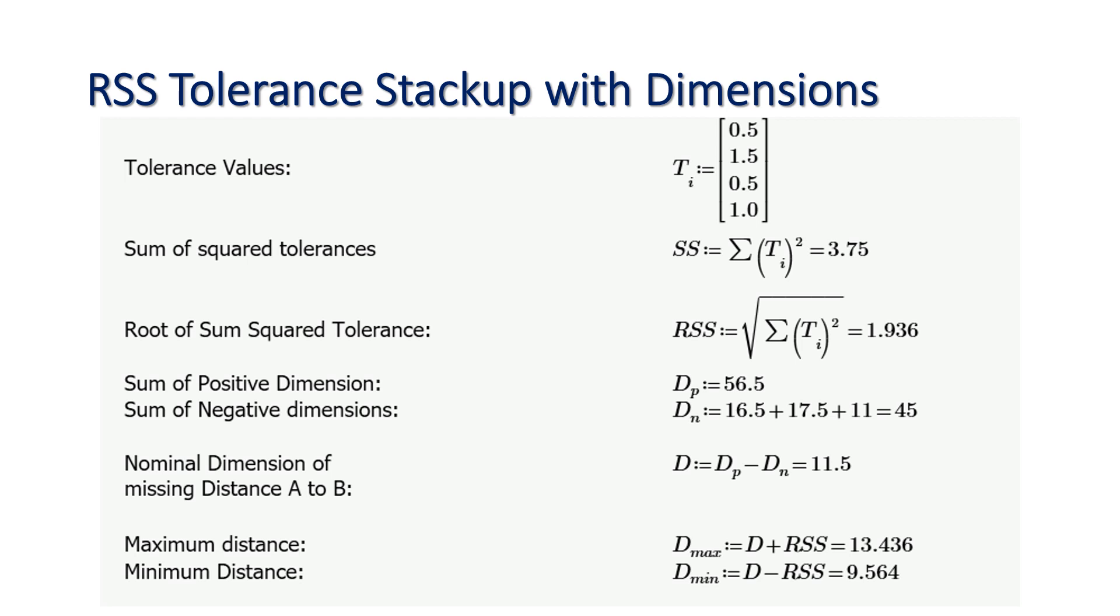Then the square root of this sum of squared tolerances is nothing but the square root of 3.75, that is equal to 1.936.